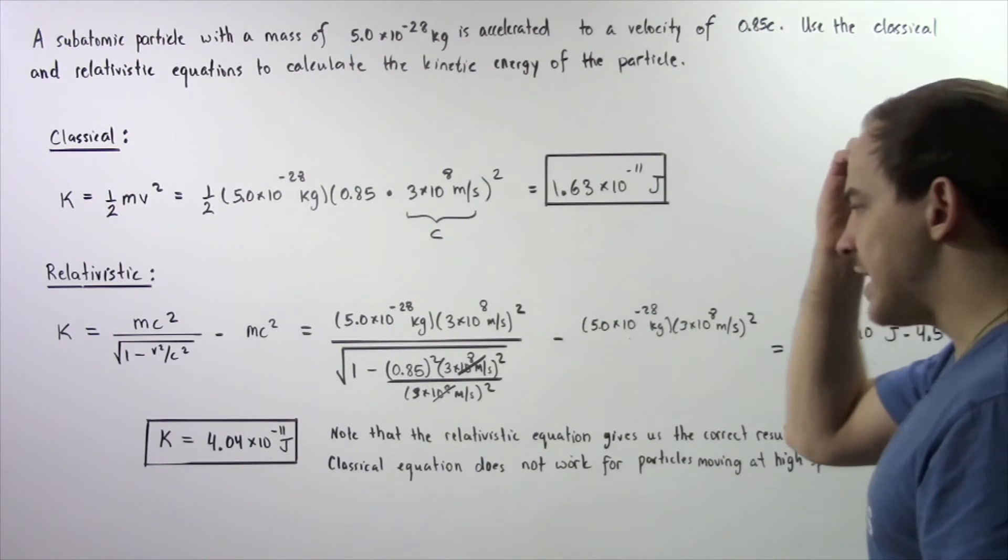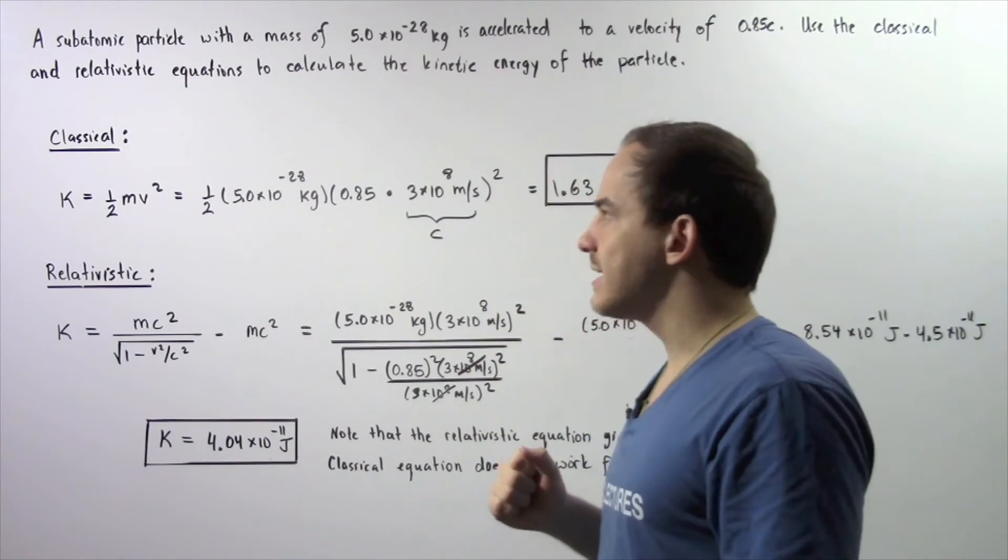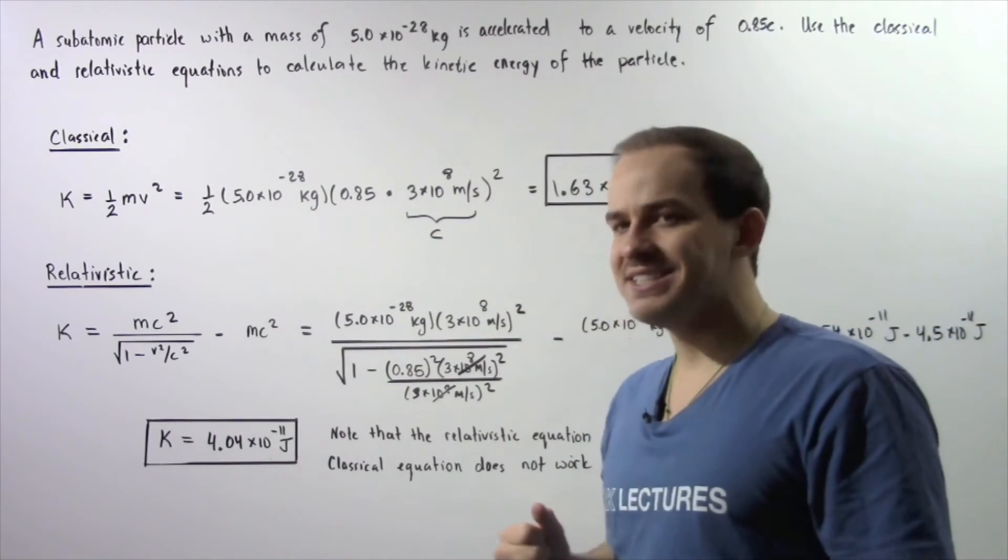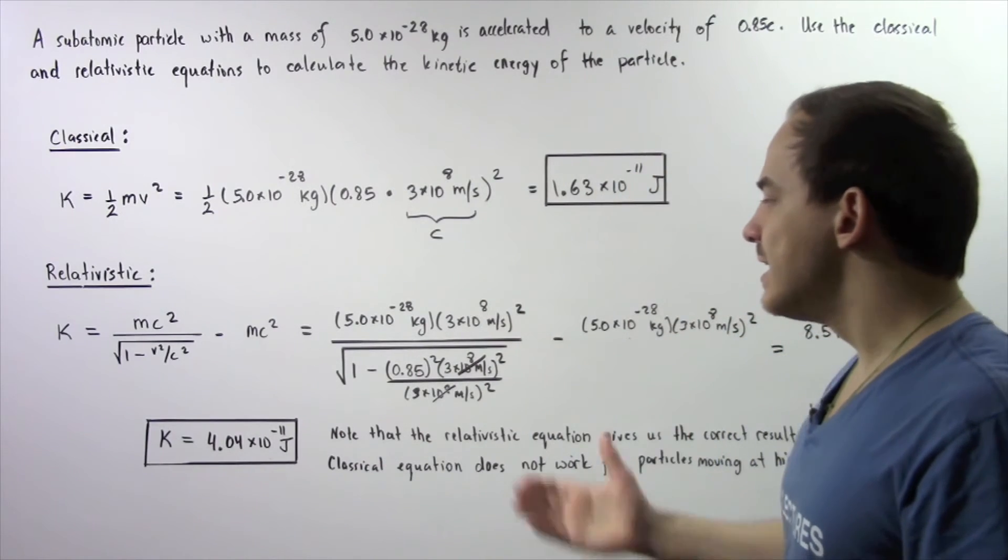We subtract these values and we find that the kinetic energy of our particle is 4.04 times 10 to the negative 11 joules.